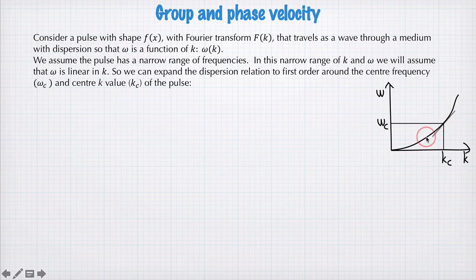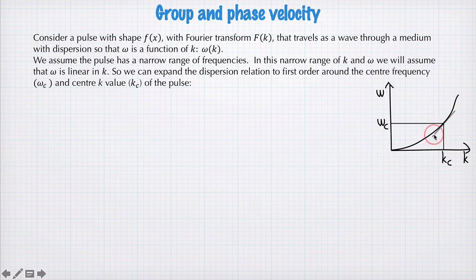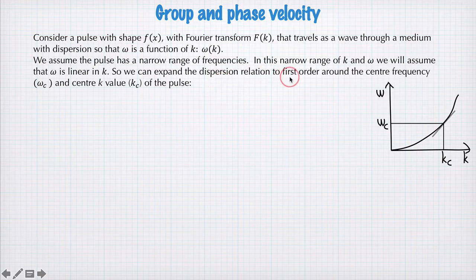I've drawn this black curve here. We're going to consider just a narrow range of k values, giving us just a narrow range of omega values, and we're going to just approximate this as linear by taking a tangent to this curve here. So what we're doing is expanding the dispersion relation to first order around the centre frequencies, omega c and kc of the pulse.